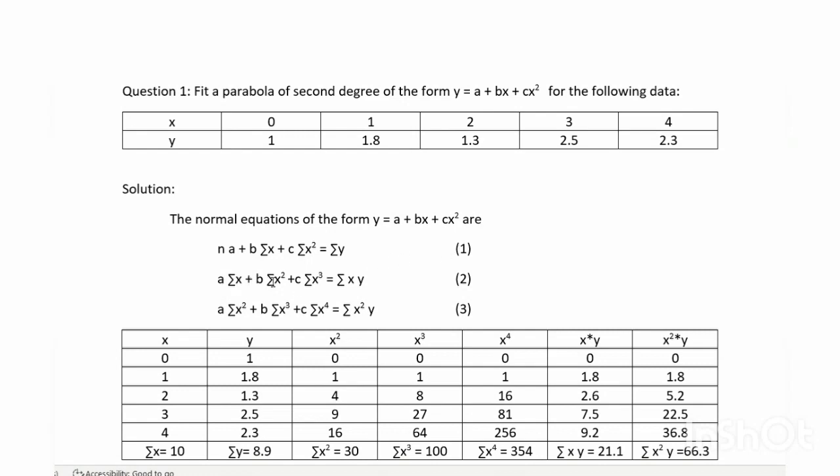a summation x plus b summation x squared plus c summation x cube equal to summation xy, which is the second equation. a summation x squared plus b summation x cube plus c summation x to the power 4 equal to summation x squared y, which is equation 3.